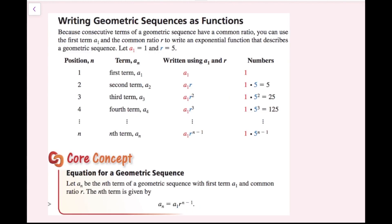Writing geometric sequences as functions: because consecutive terms of a geometric sequence have a common ratio, you can use the first term a_1 and the common ratio r to write an exponential function that describes a geometric sequence. Let a_1 equal 1 and r equal 5. We're starting with 1, then 1 times 5, then 1 times 5 times 5 (or 1 times 5 squared, which gives 25), then 1 times 5 cubed giving 125, and so on — stopping at 1 times 5 to the power of n minus 1. Whatever the position of the term is, we just subtract 1, take 5 to that power, and that gives us the value for the nth term.